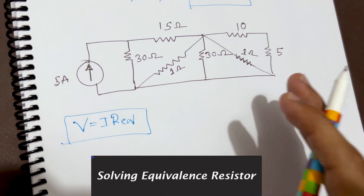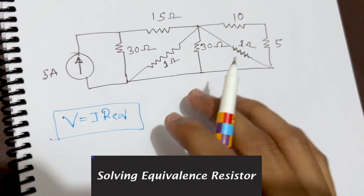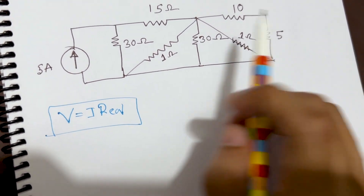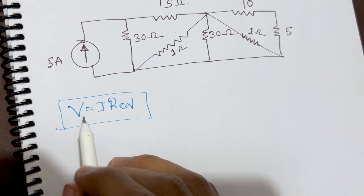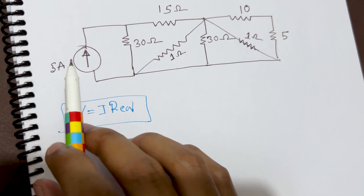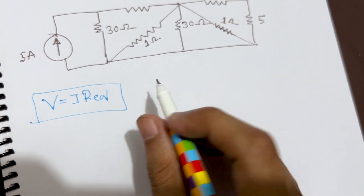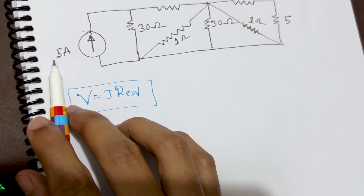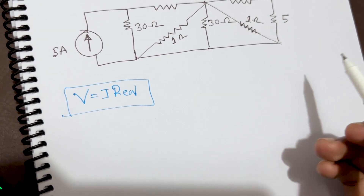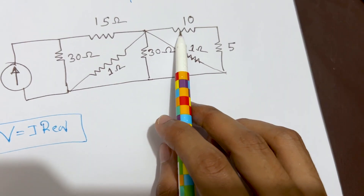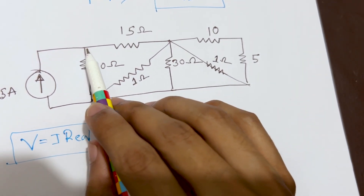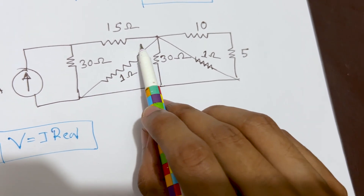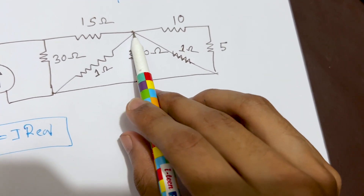I have taken a simple circuit which is a little bit more complicated compared to the previous one, but this is really important. If you want to find the voltage of the circuit, the current is already given — it is flowing at 5 ampere. We need to find the equivalent resistor so we can multiply it with 5 ampere to find the voltage.